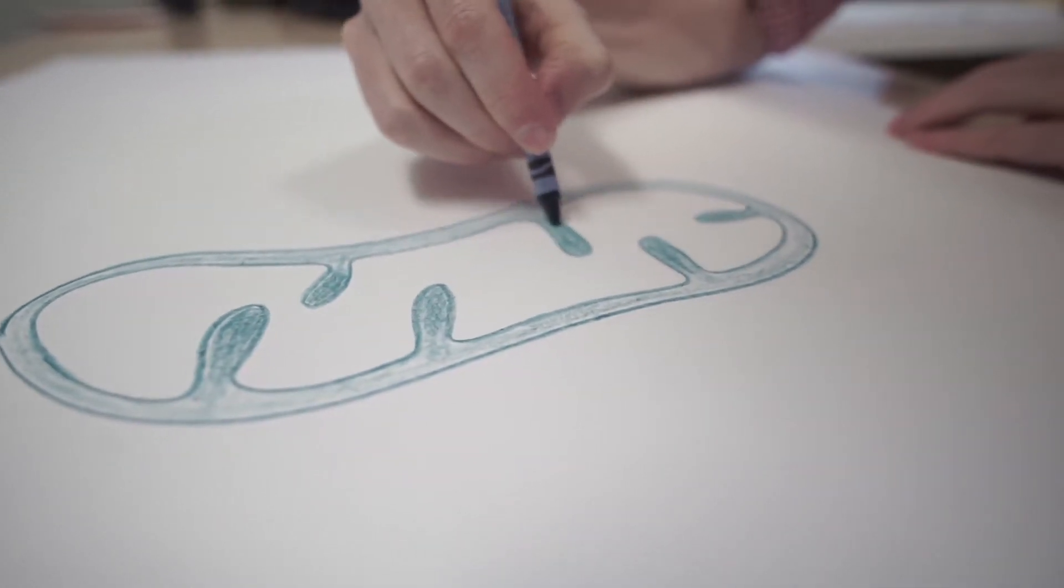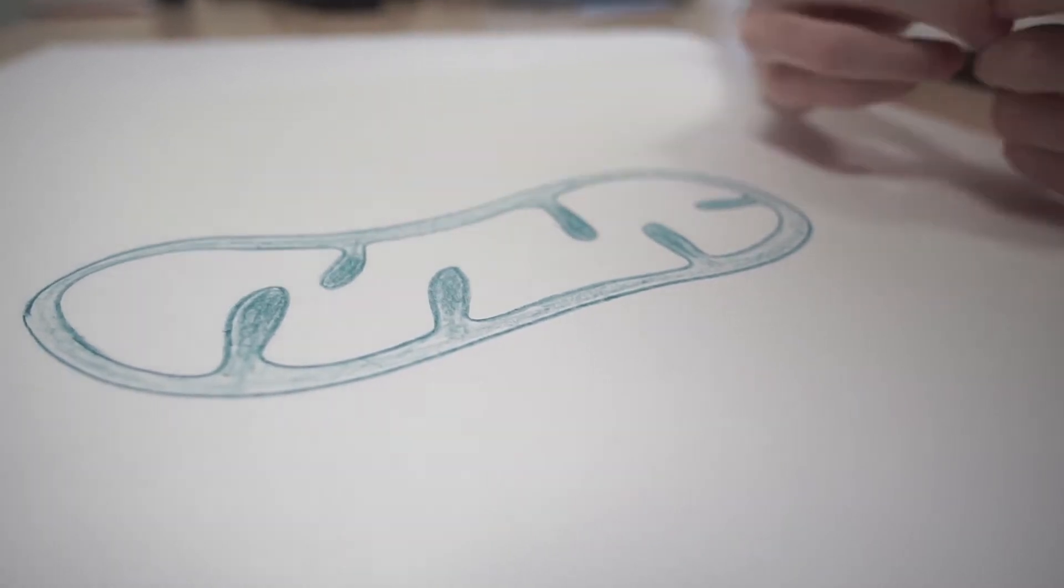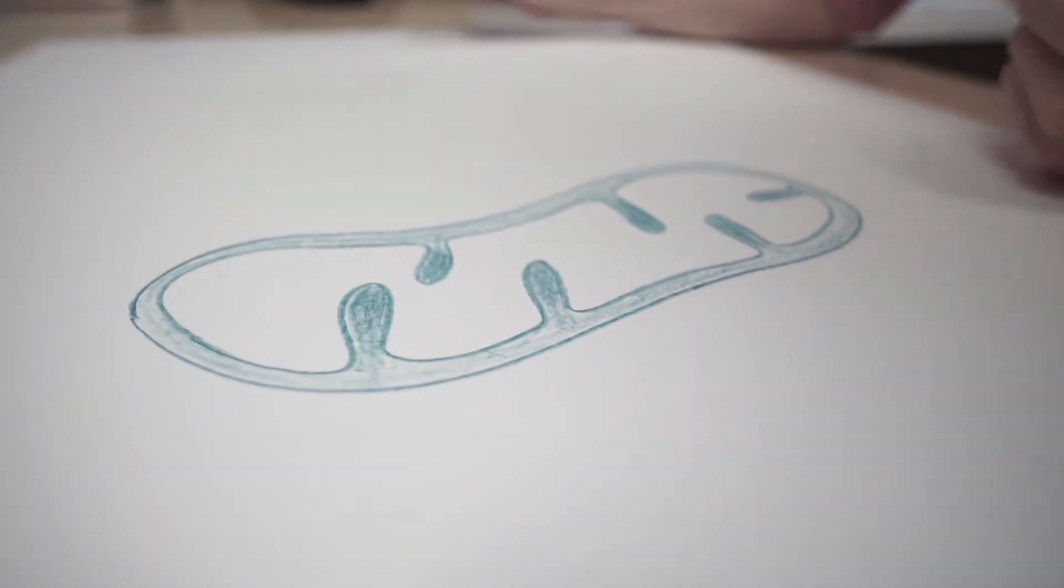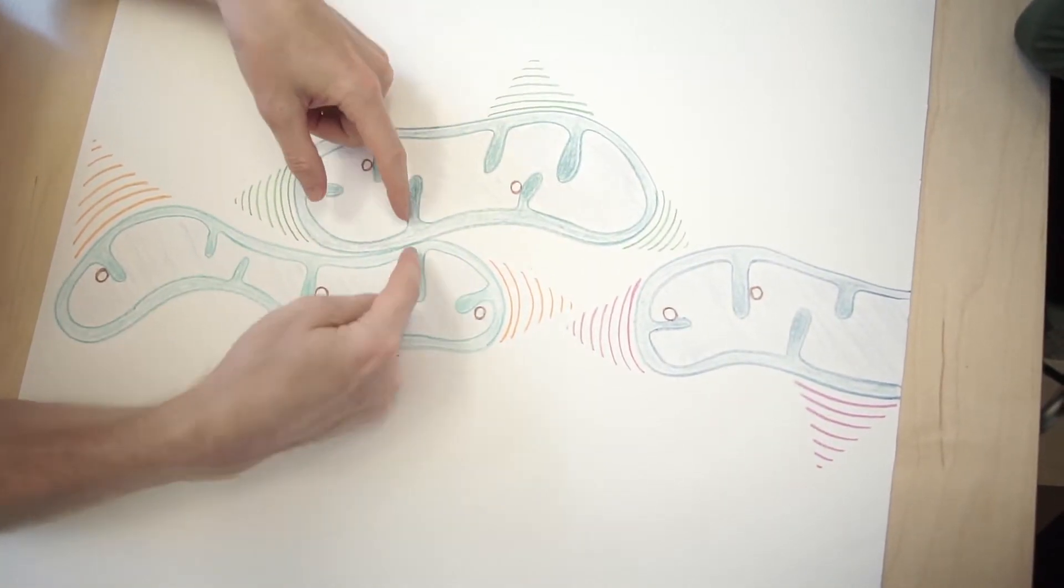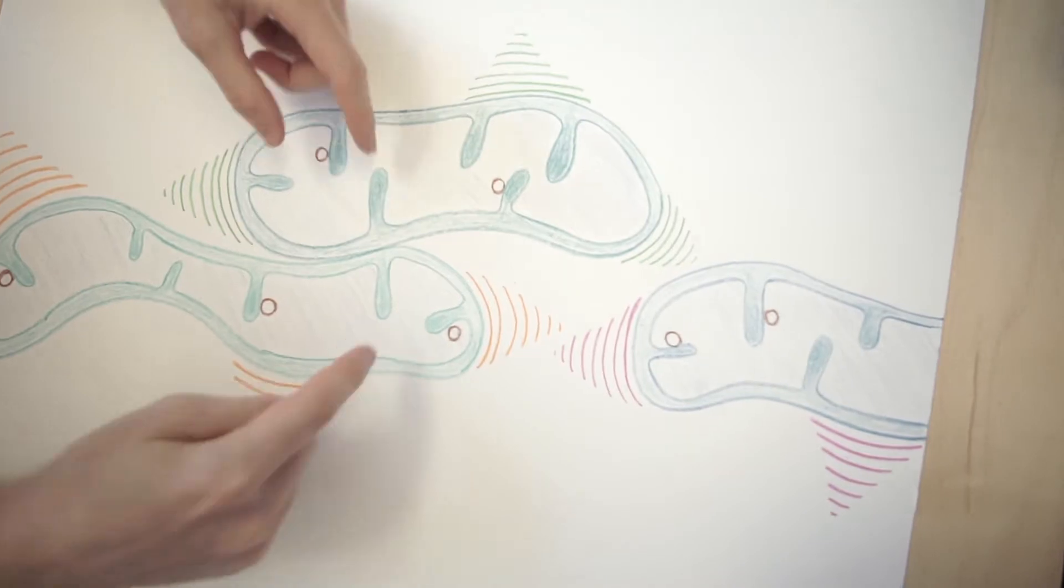The reason we breathe and the reason we have lungs and that we breathe as organisms is to bring oxygen here in these Christie. And we found that they actually become aligned between the mitochondria. People call this kiss and run.